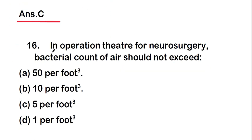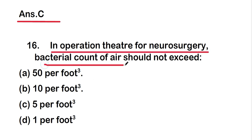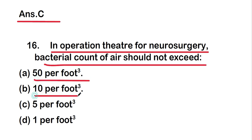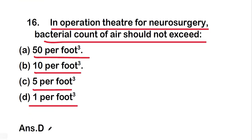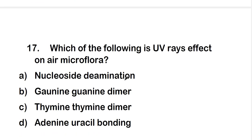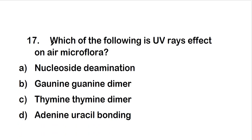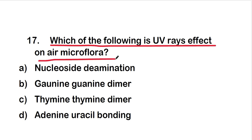Next question: in an operation theater for neurosurgery, the bacterial count of air should not exceed — 50 per foot cube, 10 per foot cube, 5 per foot cube, or 1 per foot cube? The right answer is option D, that is 1 per foot cube. In a neurosurgery operation theater, bacterial count should not exceed 1 per foot cube.